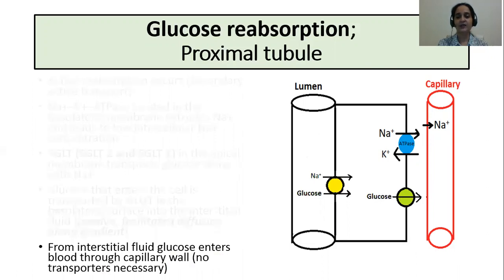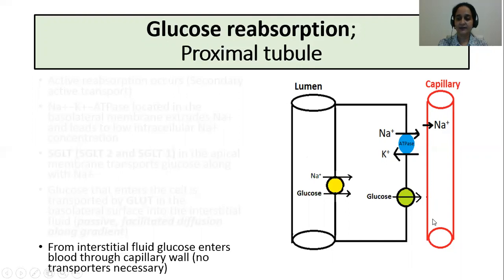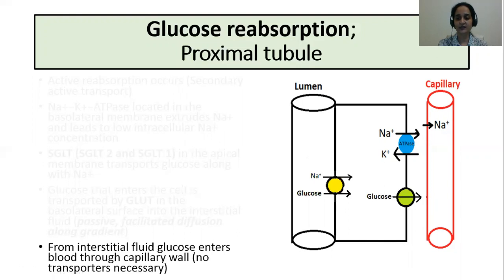From the interstitial fluid, glucose enters the blood via the peritubular capillary, and this movement of glucose does not require any transporters — it moves by bulk flow.